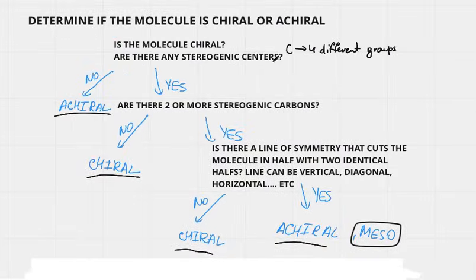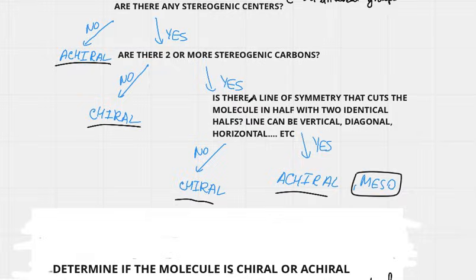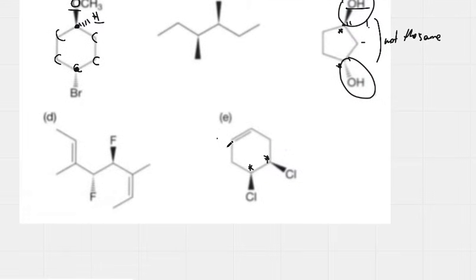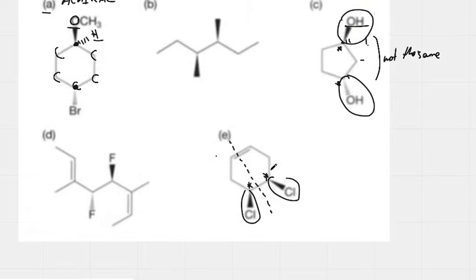Going through the chart: stereogenic centers — yes. Two or more — yes, there are two. So the last question is: is there a line of symmetry? If you cut this molecule through the middle, you get two exactly identical halves. The chlorines match — unlike molecule C where the OH groups did not match. Since there is a line of symmetry, this compound is called meso, and it is achiral.